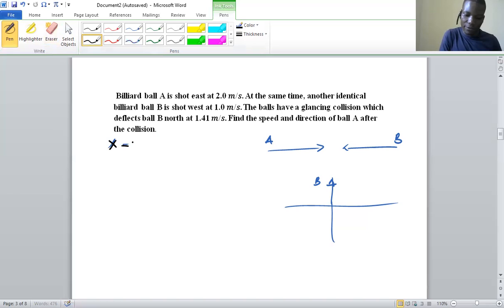In the x direction, the momentum for both balls—and we've been told that these balls are identical, so mass of A and mass of B are the same.